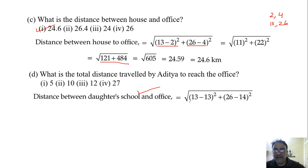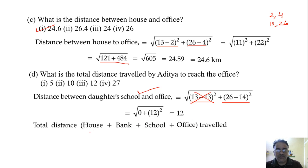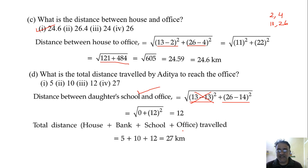We still need the distance from school to office: √((13−13)² + (26−14)²) = √(0 + 144) = 12. Now adding all distances: house to bank is 5, bank to school is 10, school to office is 12. Total is 5 + 10 + 12 = 27 kilometers — fourth option is correct.